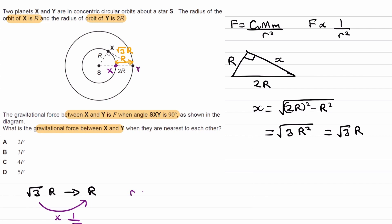In other words, R is getting multiplied by 1 over root 3. If F is proportional to 1 over R squared, that means force is getting multiplied by 1 over the factor by which R changes, 1 over root 3, squared.